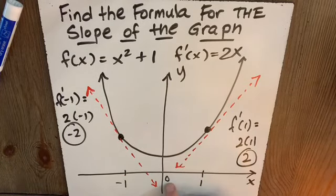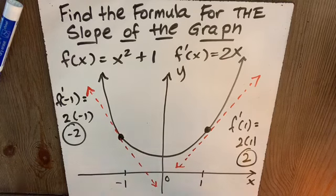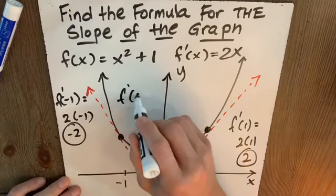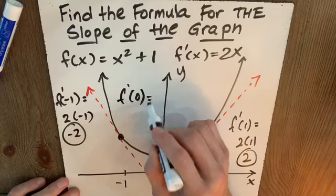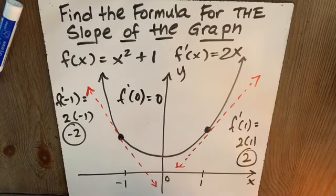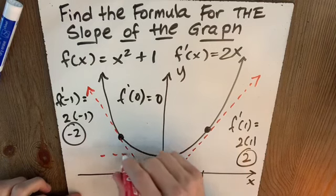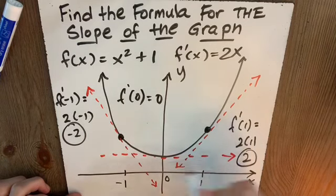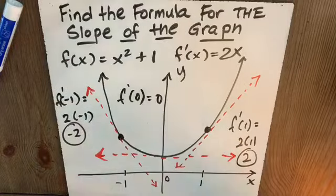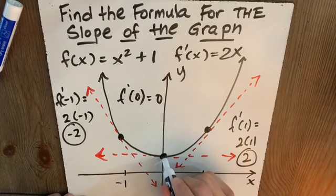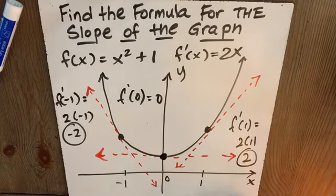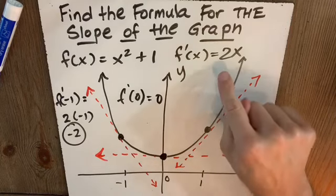How about f dash of 0? If I do f dash of 0, and I'm plugging into this, I get 2 times 0, which is 0. Well, that means the slope of this tangent line is 0. Don't forget, slope of a horizontal tangent line is 0. So I get the three different slopes for three different inputs. Depends on where my input is.